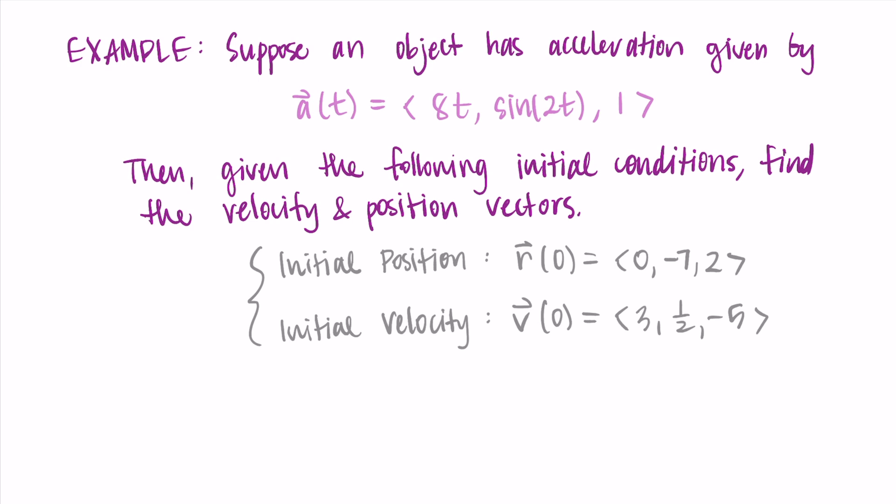This one is a little more tricky. You could try it on your own — at least try to find the velocity vector by integrating, see how far you can get, maybe find both the velocity and position vectors using the initial conditions.